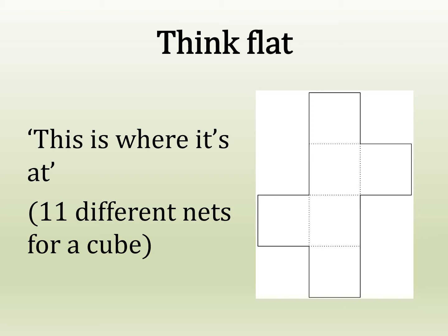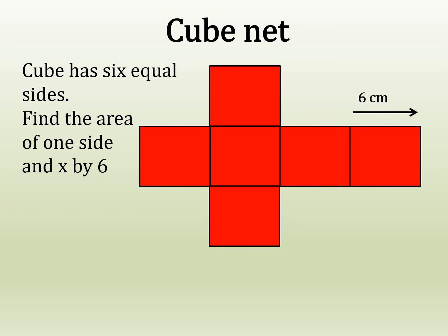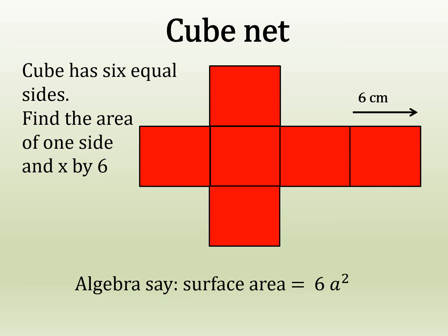This is the net — this is how a cube would look unfolded. A cube has six equal sides, so we find the area of one side and multiply by six. In algebra, we say six a squared. That works out as 36 plus 36 plus 36 plus 36 plus 36 plus 36, or six times 36, which is 216 centimetres squared.